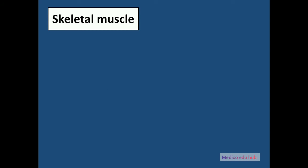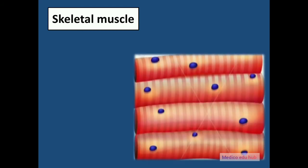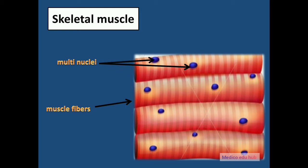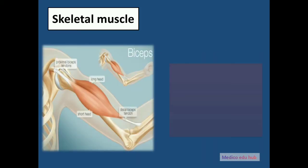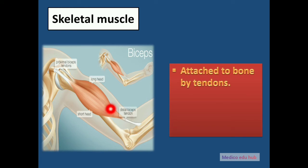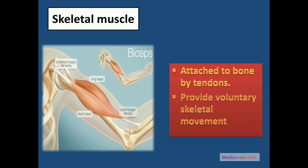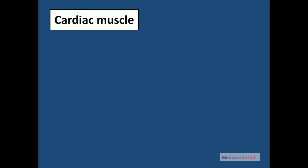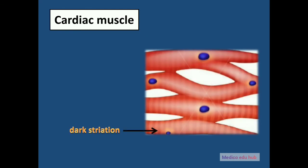First, we will discuss skeletal muscle. Skeletal muscle tissue is comprised of long cylindrical cells called skeletal muscle fibers that are parallel to one another and unbranched. These fibers are multinucleated, meaning they have many nuclei, and have alternating light and dark bands called striation. Skeletal muscle is attached to bone by tendons, and provides voluntary skeletal movement of the body.